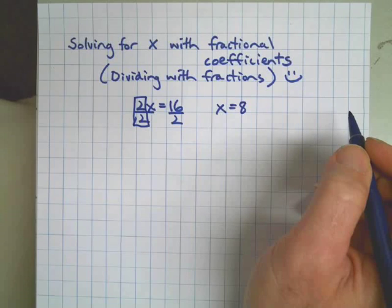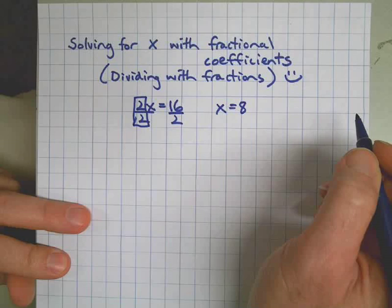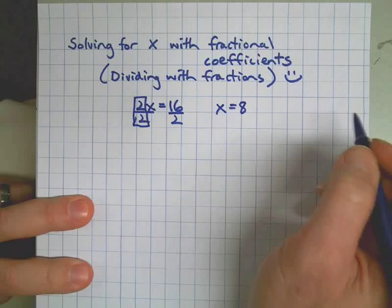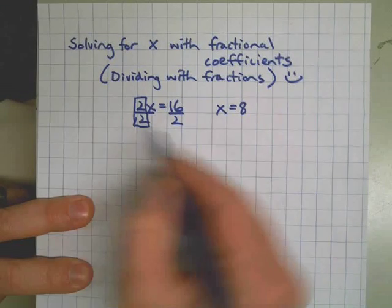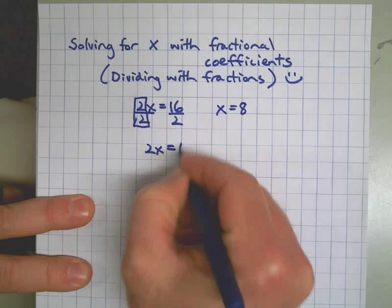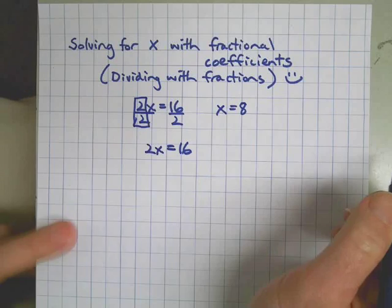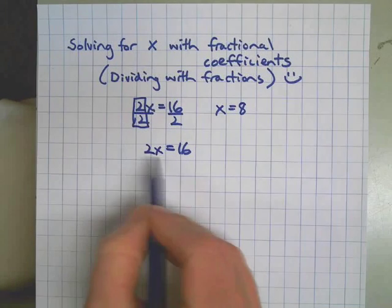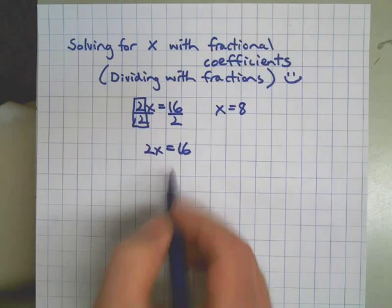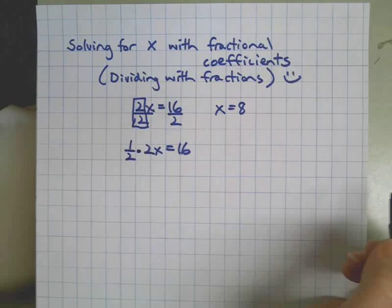That was all great, but now we have a different problem: what do we do when the coefficient is a fraction? We can learn this by going back to what we already know and looking at it from a different perspective. Another way of looking at dividing by 2 is multiplying by the reciprocal.